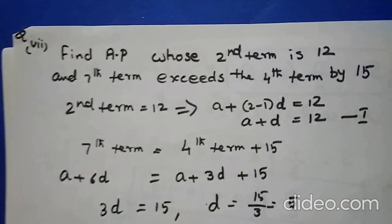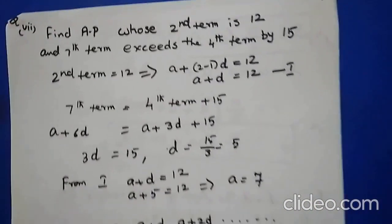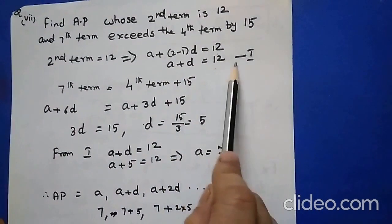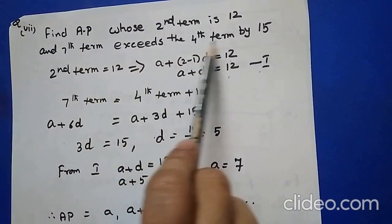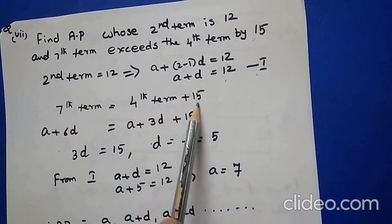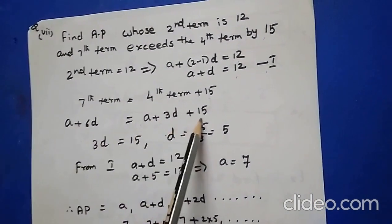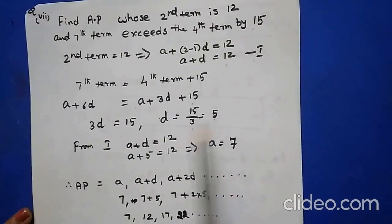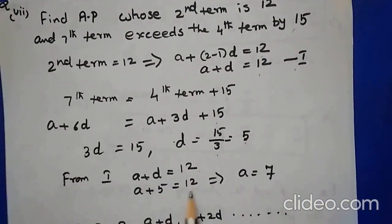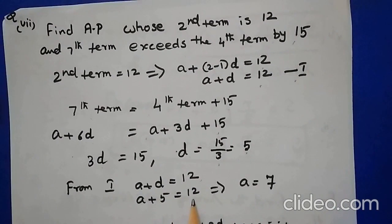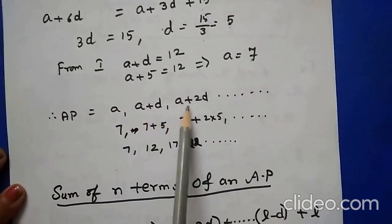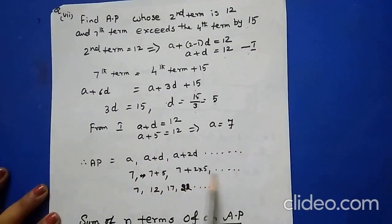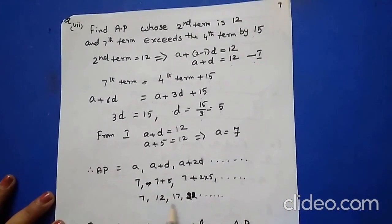Find the AP whose second term is 12 and 7th term exceeds the 4th term by 15. Second term: A + D = 12 (equation 1). Seventh term equals fourth term plus 15: A + 6D = A + 3D + 15, giving 3D = 15, so D = 5. Substituting into equation 1: A + 5 = 12, therefore A = 7. The general form A, A+D, A+2D gives the AP: 7, 12, 17, 22, etc.